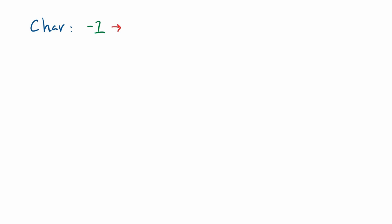In the video on signed and unsigned integers, I explained how we can represent a negative number. For example, with the char data type, a value like negative one could be represented by using the leftmost bit as a sign bit — if this bit was a one, it represented a negative number, and if it was a zero, it represented a positive number. So negative one using a char looks like: the leftmost bit represents the negative sign, and the rightmost bit represents the value one.